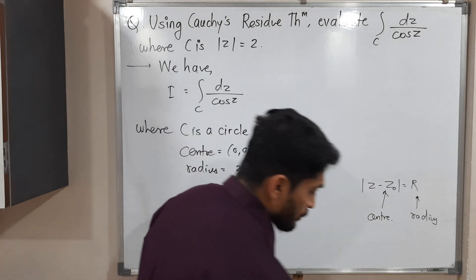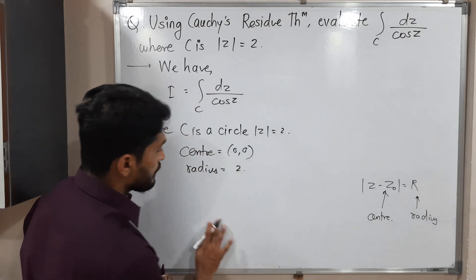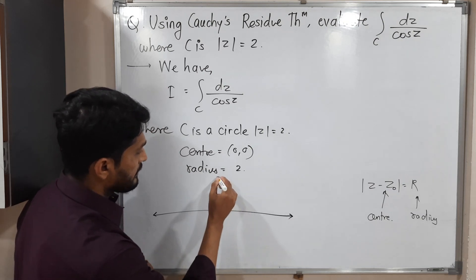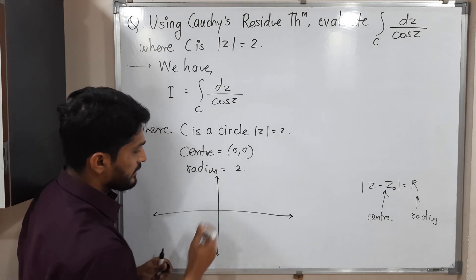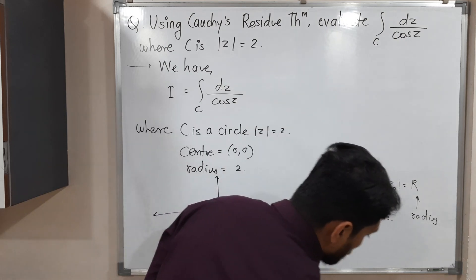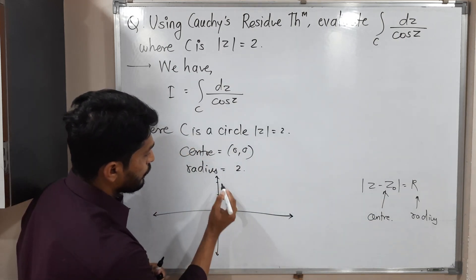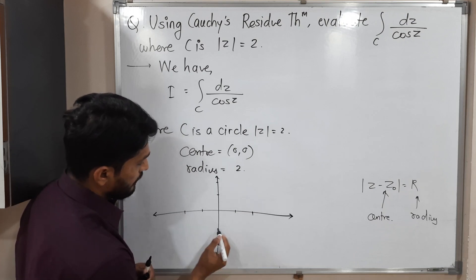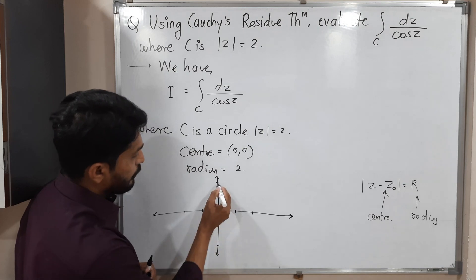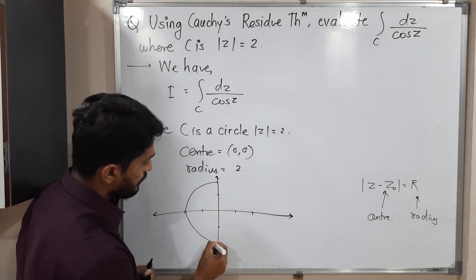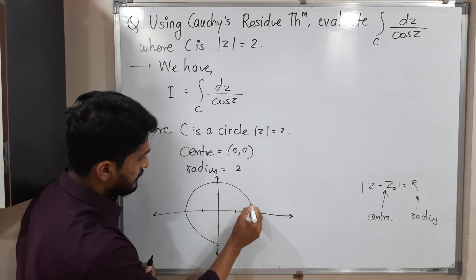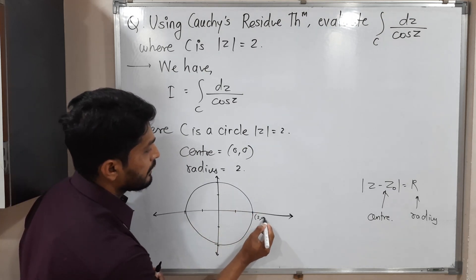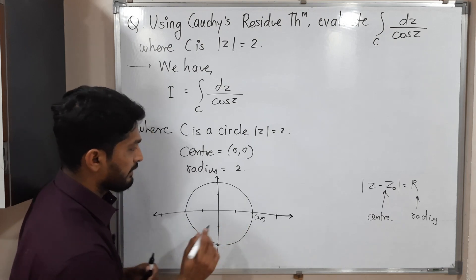So let us draw a circle with center 0,0 and radius 2. This is the real axis and this is the imaginary axis. Marking the scale: 1, 2, minus 1, minus 2 on both axes. The circle with center 0,0 and radius 2 will look like this.